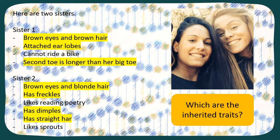But it's not inherited that you can ride a bike — you learn to do that. It's not inherited that you like to read poetry; you learn to develop a liking for something. And that applies to sprouts as well.